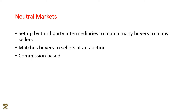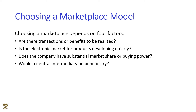The neutral market is set up by third-party intermediaries to match many buyers to many sellers — a perfect oligopoly that matches buyers and sellers like an auction on a commission basis. Choosing the right marketplace model depends on four factors: the transaction benefits to be realized, whether the electronic market for the product is developing quickly, whether the company has substantial market share or buying power, and whether a neutral intermediary would be beneficial.